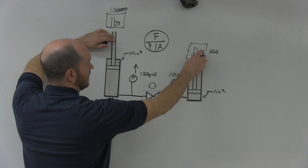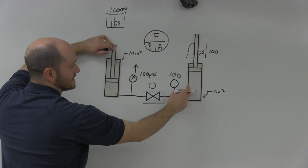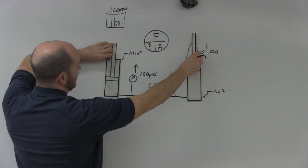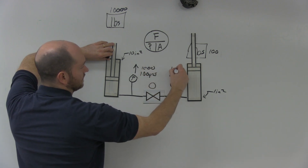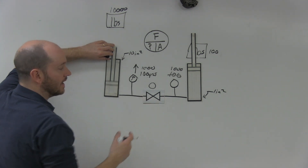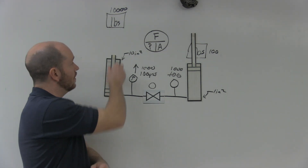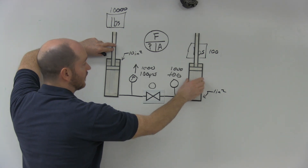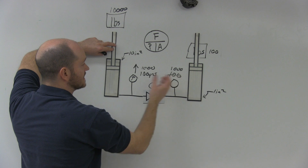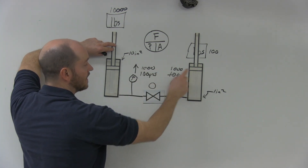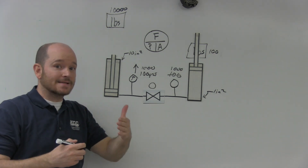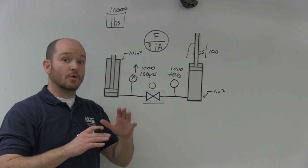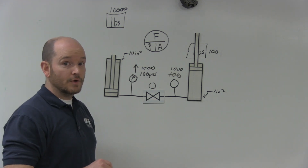Now let's say this cylinder has a shorter stroke. As soon as it gets to the top and flow stops, my pressure will go up to 1,000 PSI. In these circuits, if there's no flow you get maximum pressure, but if flow is capable because there's a load that can be overcome, flow will happen and pressure will be set by the load. Flow has to happen in a hydraulic system — it's the stuff that does stuff.